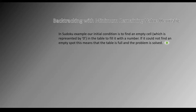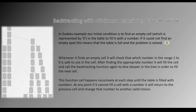In the Sudoku example, our initial step is to find an empty cell, which is represented by 0 in our code, in the table to fill it with a number. If it cannot find any empty spot, this means the table is full and the problem is solved. Whenever it finds an empty cell, it will check which number in the range 1 to 9 is safe to use in that cell. After finding the appropriate number, it will fill the cell and call the backtracking function again to dive deeper into the game tree in order to fill the next cell.